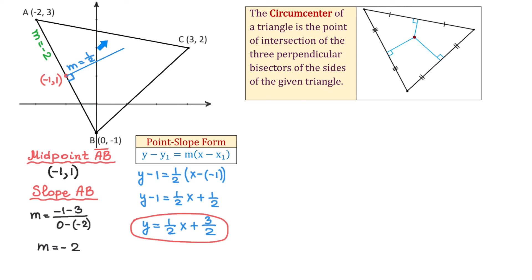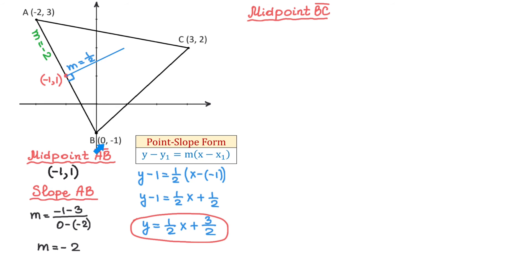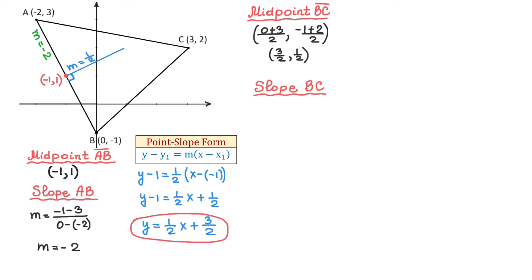Now let's choose side BC and apply the same steps, starting by finding the midpoint. To find the x-coordinate, we add 0 and 3 and divide by 2, giving 3/2. To find the y-coordinate, we write (−1 + 2)/2 = 1/2. So the midpoint has coordinates (3/2, 1/2). Next, the slope m = (2 − (−1))/(3 − 0) = 3/3 = 1. So we have midpoint (3/2, 1/2) and slope 1.